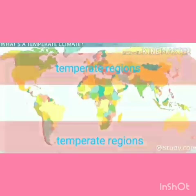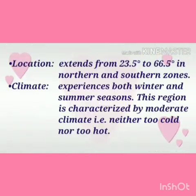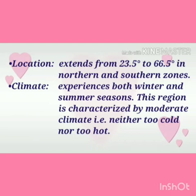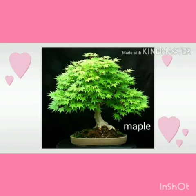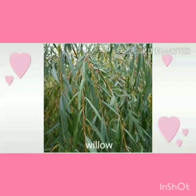The second one is temperate regions. Location: this region extends from 23.5 degrees to 66.5 degrees in northern and southern zones. Climate: this region experiences both winter and summer seasons and is characterized by a moderate climate that is neither too cold nor too hot. The forests of temperate regions comprise plant species such as oak, maple, elm and willow.